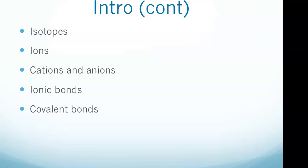Ions are atoms that are not electrically balanced because they have either added or lost electrons. Within ions, we need to be familiar with cations and anions. A cation is the result of electrons being lost and therefore has a positive charge. An anion is the result of an atom having extra electrons and therefore has a negative charge.